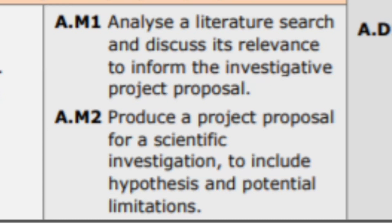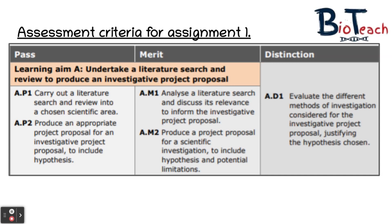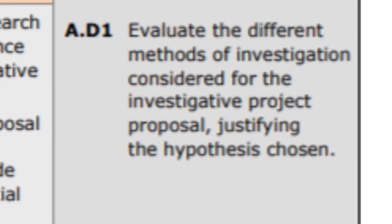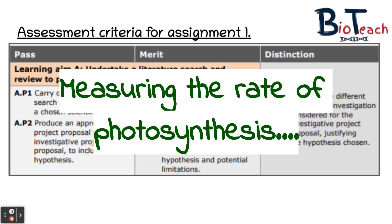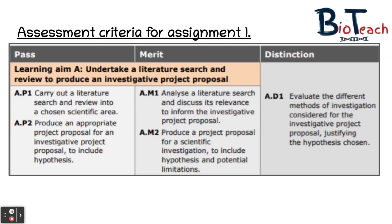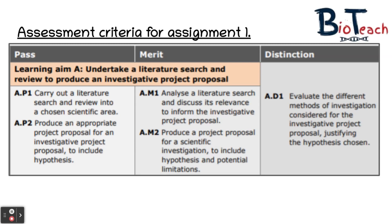For the merit you need to include information on limitations of your project, such as time available, the range of equipment needed, or the accuracy of equipment available in your school or college lab. The distinction will be awarded to students who show they've considered a range of different methods. For example, for rate of photosynthesis, one method could be counting bubbles of oxygen the plant gives off; another would be collecting the gas in a syringe and measuring the volume. In discussing and evaluating different methods you can justify why you chose your particular method.